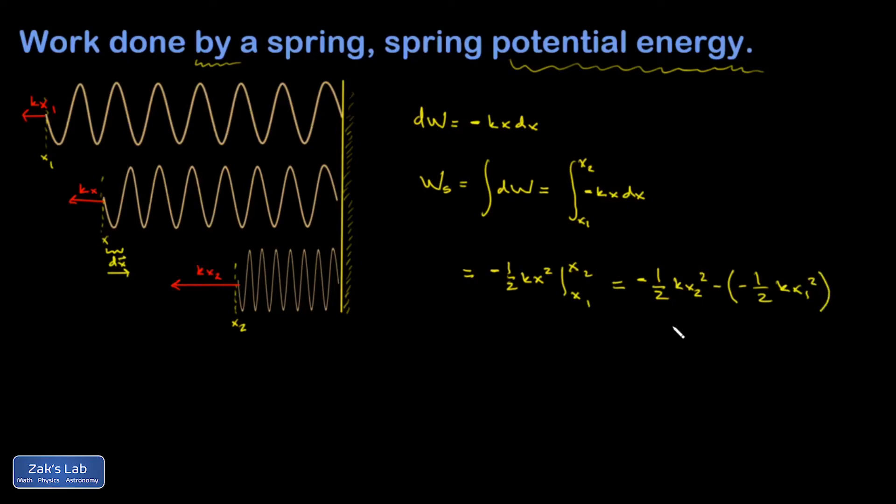And here's where we give a name to this expression, one-half kx squared. We're going to call that the spring potential energy: U_spring is one-half kx squared. And so what I see in this first term is U2, the spring potential energy at a compression of x2. And in this term, I see a U1.